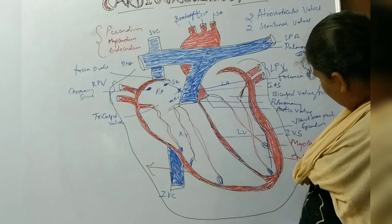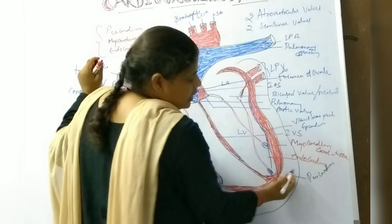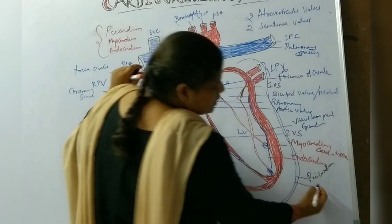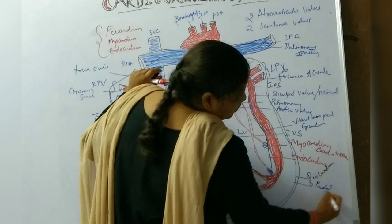Beneath the pericardium we have another layer, which is the outer parietal serous membrane.